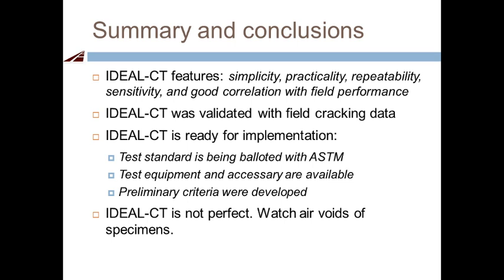Wonderful, thank you Fuji. We have quite a few questions. The first: how many test replications are used in determining COV results? The results shown in this presentation use three replicas. You can test five replicas to improve repeatability — since this test requires no cutting, notching, or any other preparation, molding five specimens is quite easy. The next question: is the acceptable CT Index around 100 based on comparisons to IFIT and the overlay tester?